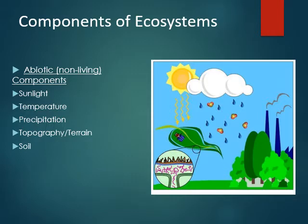Now the abiotic, or non-living components. Lots of different things can go into an ecosystem and influence the habitat or biome. Abiotic components include sunlight, temperature, precipitation, topography, terrain, soil, and more. Anything physical — including chemical resources in the soil, possibly the water or the air — all of those things are abiotic in an ecosystem.